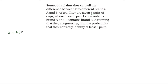n is 5 because there are five pairs. Since there are two brands, p = 0.5. So X is binomially distributed: X~B(5, 0.5). We need to find the probability that they correctly identify at least three pairs, i.e. P(X ≥ 3).